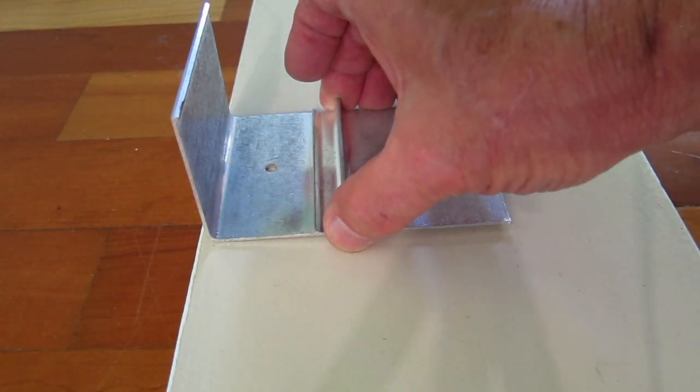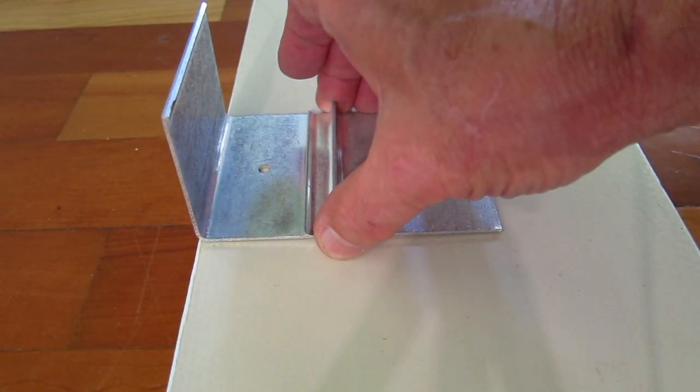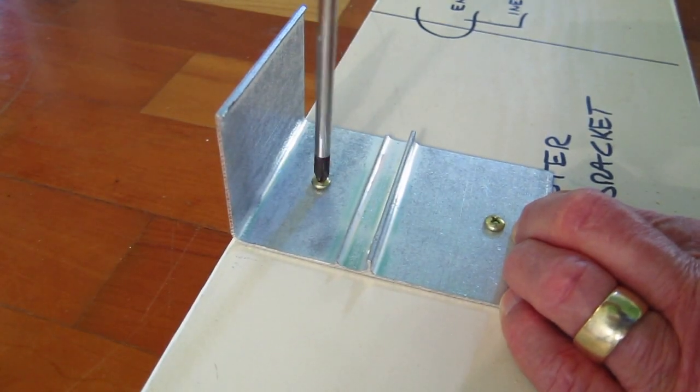Align the top of the short leg of the L bracket with the top of the fascia board. Once the brackets are attached to the fascia,